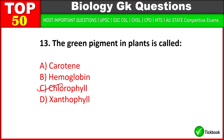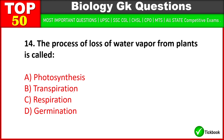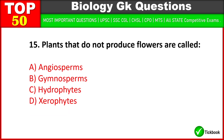The green pigment in plants is called chlorophyll — option C is the right answer. The process of loss of water vapor from plants is called transpiration — option B is the right answer.